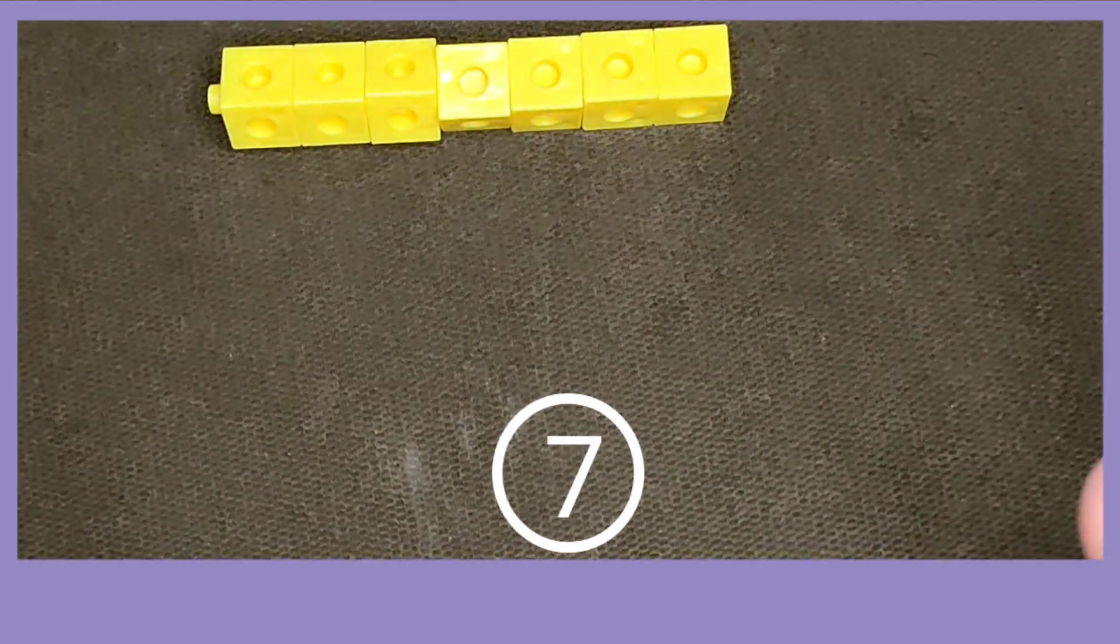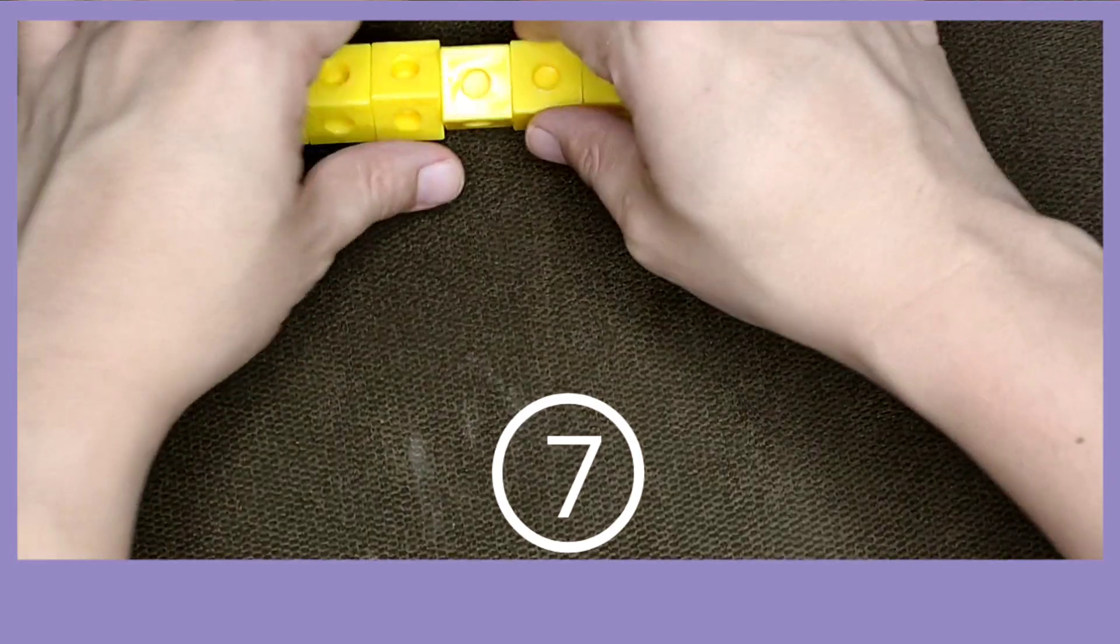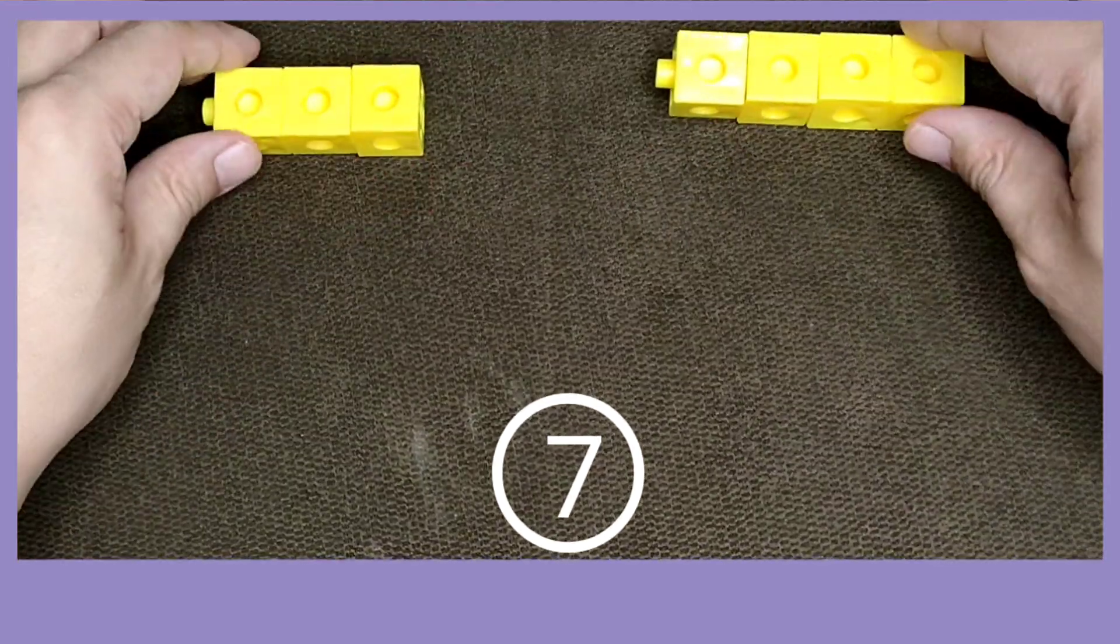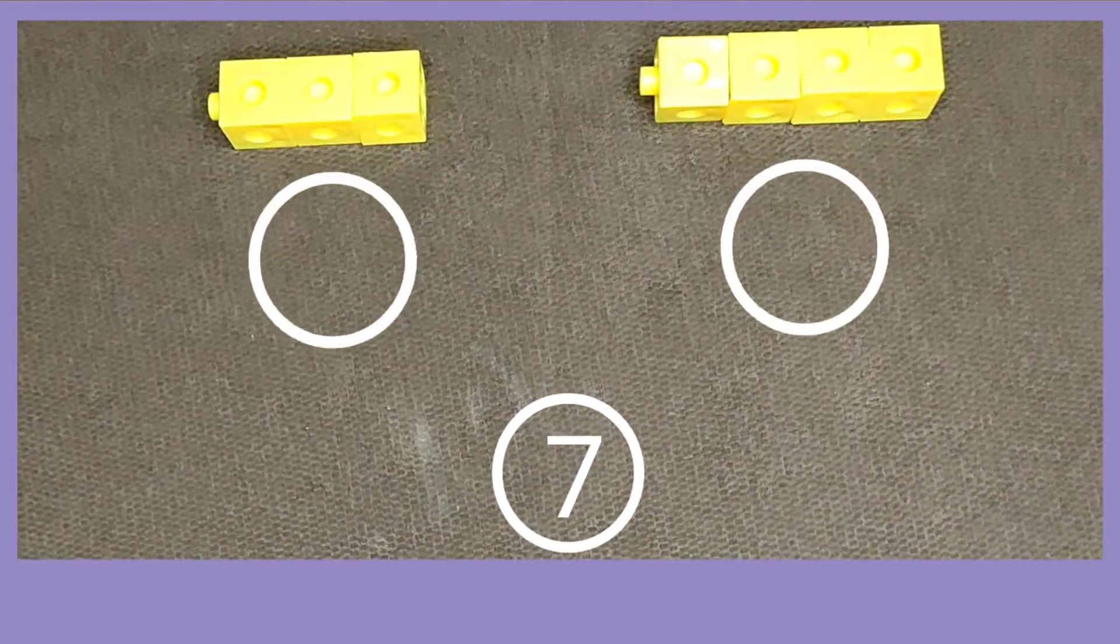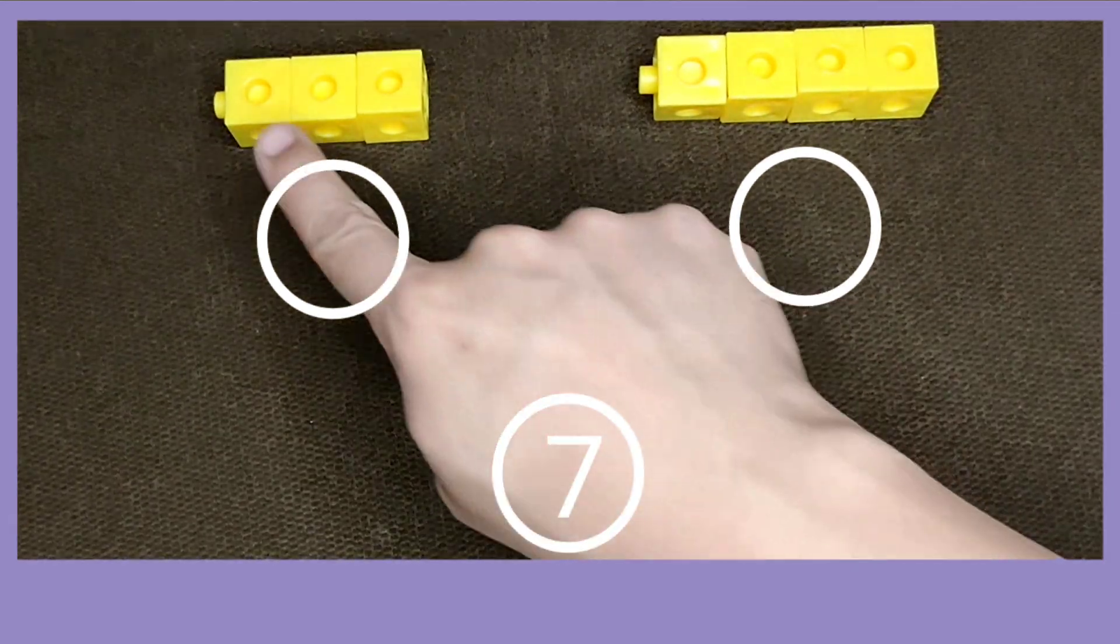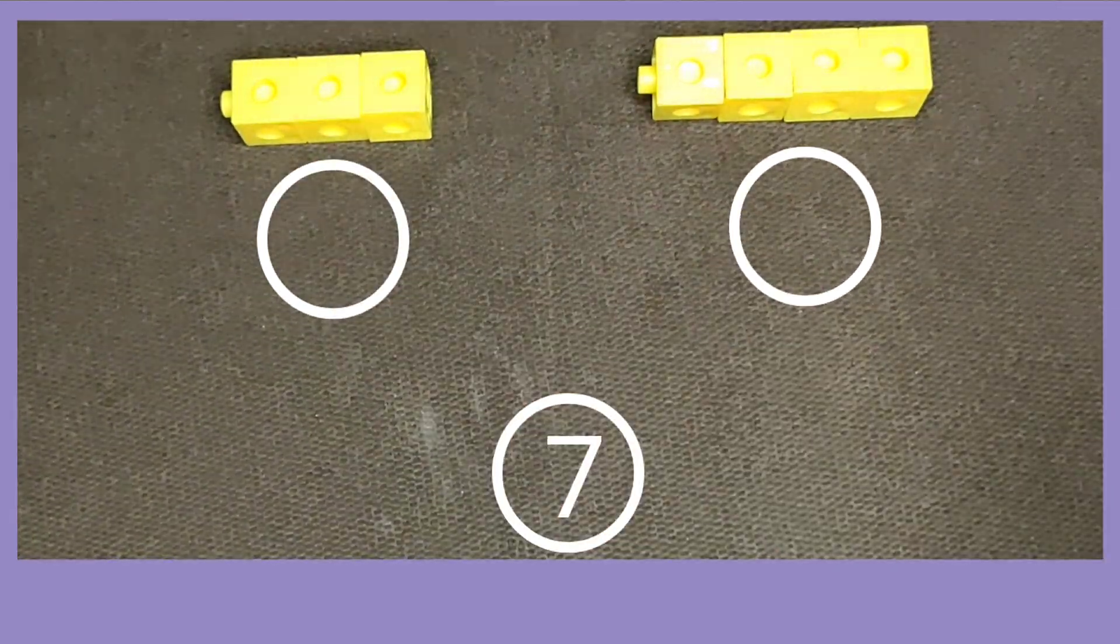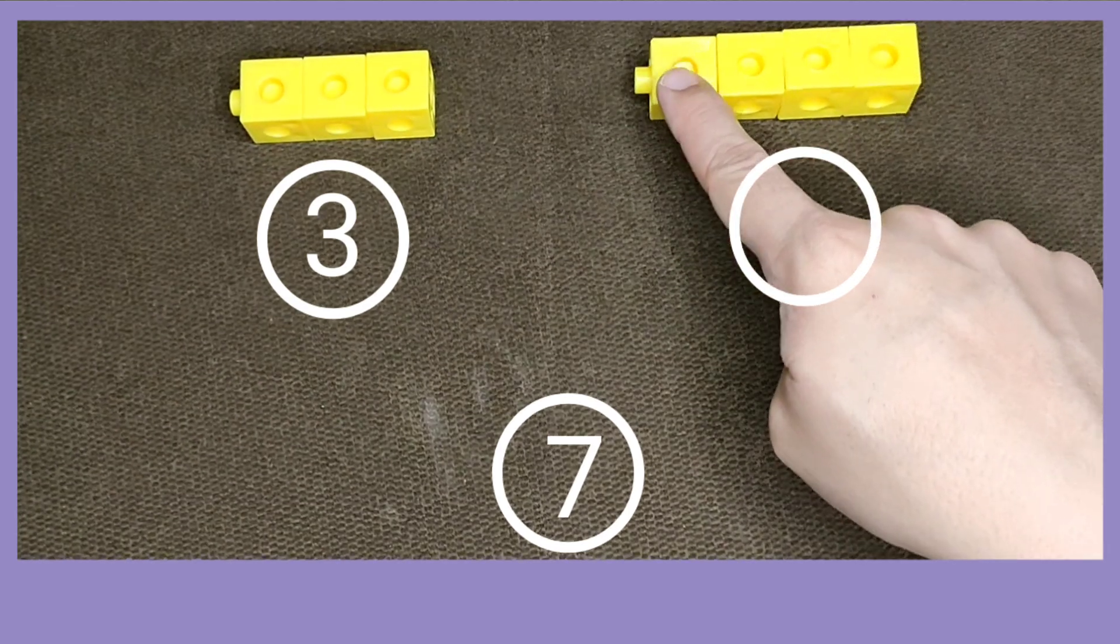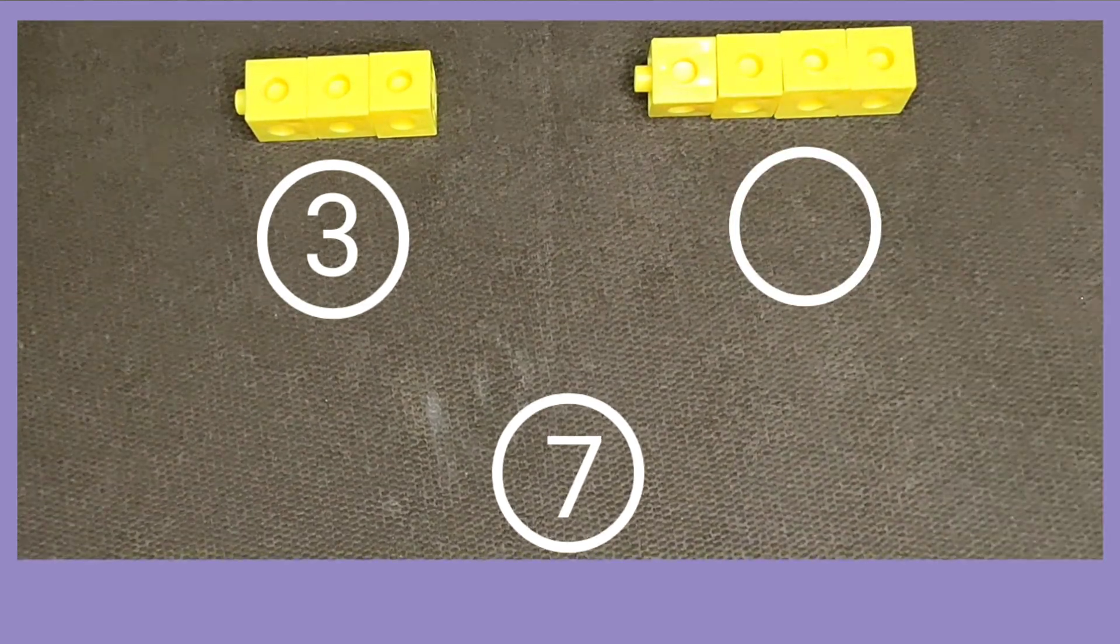Let's try to separate them into two groups. Let's break them into two groups. On the first group, we have one, two, three. On the second group, we have one, two, three, four.